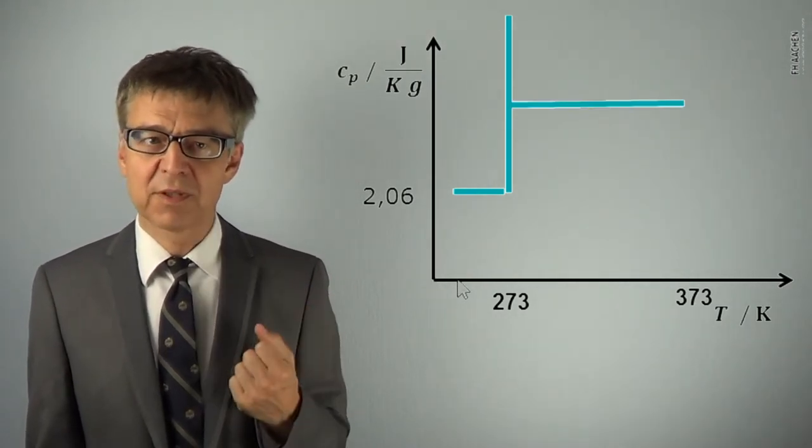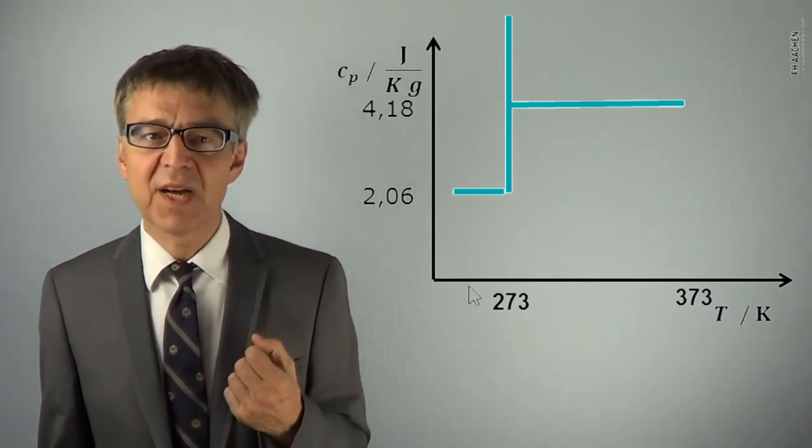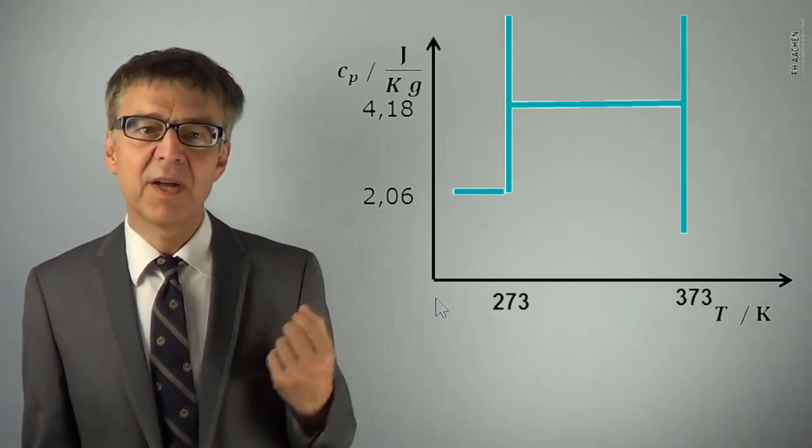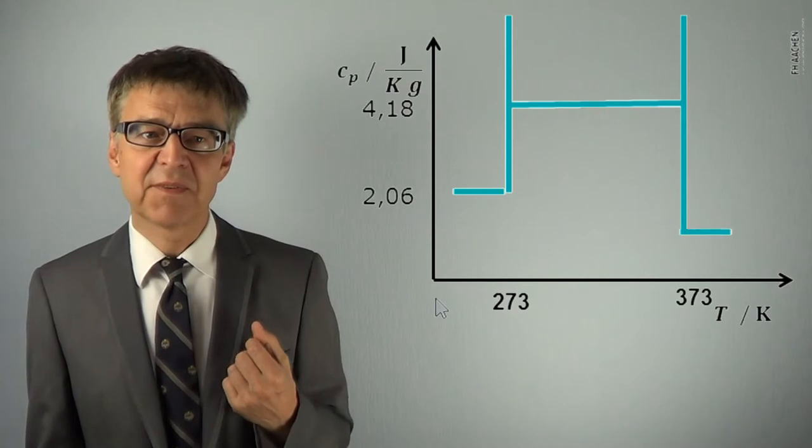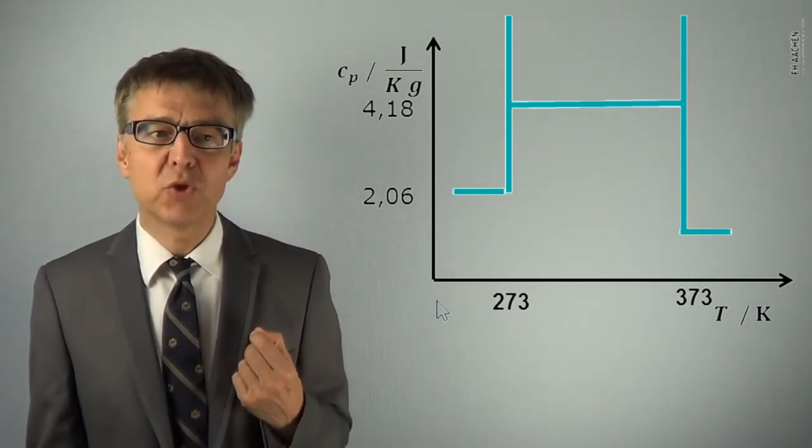Then a singularity at 373K, and above 373K, the specific heat capacity of water vapor of 1.88J per gram.